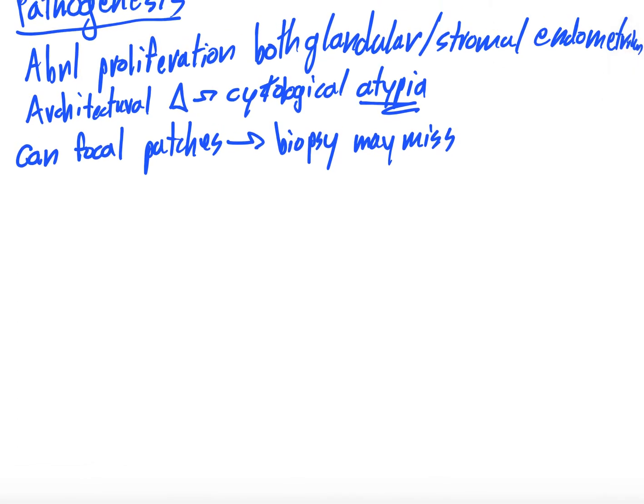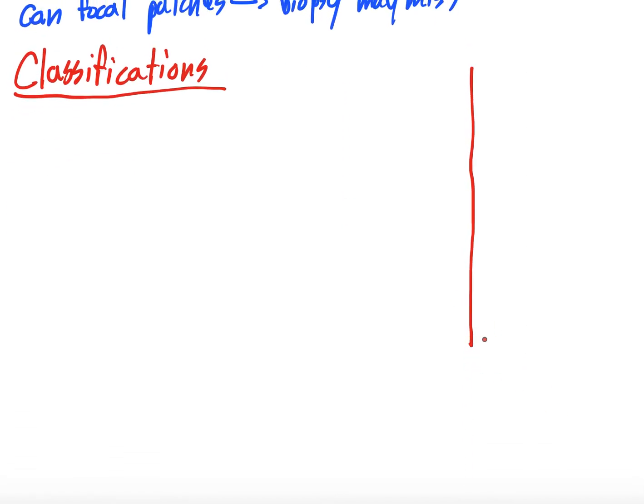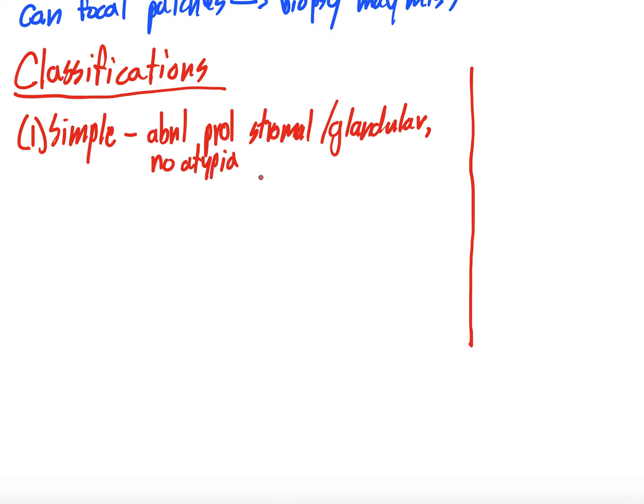Classifications. I'm going to talk about classifications and leave room to the right here. When we talk about treatment, we're going to come back up to this area because classifications and treatment are correlated. First you can get simple. What simple is, is there is an abnormal proliferation of those stromal and glandular elements, which is part of the definition, but there's going to be no atypia. In these, less than 1% progress to carcinoma. So that's simple. That's the most benign.